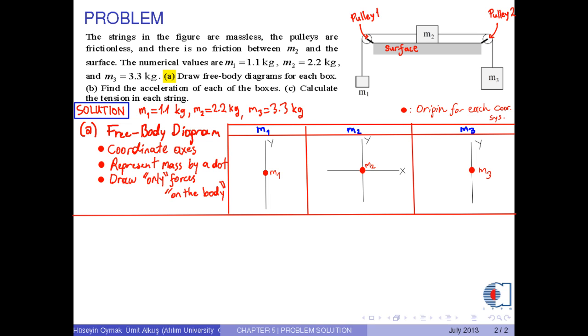After that, draw only forces on the body. First of all, we draw the weights of the objects or the gravitational force on the objects due to the gravity of the Earth. Secondly, we draw the normal force perpendicular to the surface if there is a contact with any surface. In our example, only M2 is in contact with the surface. So, the normal force is drawn to be like this.